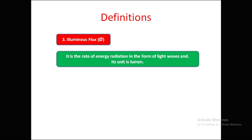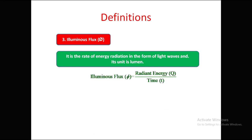The next definition is luminous flux. Luminous flux is the rate of energy radiated in the form of light waves. Its unit is lumen. The formula is: luminous flux phi equals radiant energy Q divided by time t — phi = Q/t.